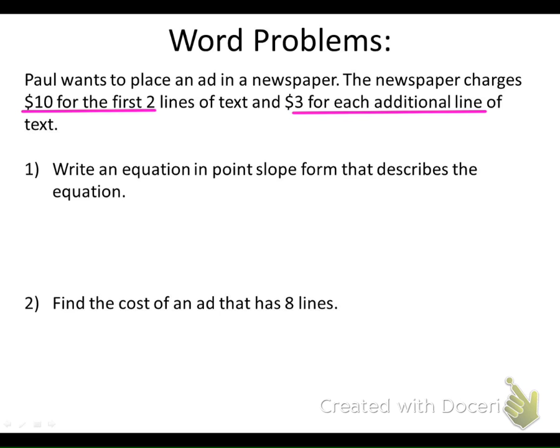We want to first write an equation in point-slope form that describes the equation. An important first thing to do in these problems is identify your variables - what's our independent variable and what's our dependent variable. In this situation, our independent variable is going to be the number of lines and our dependent variable is going to be the cost, because the cost is going to depend on the number of lines you use in your ad. Obviously a longer ad that takes up more lines is going to cost more in the newspaper.